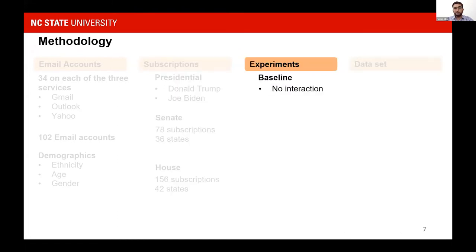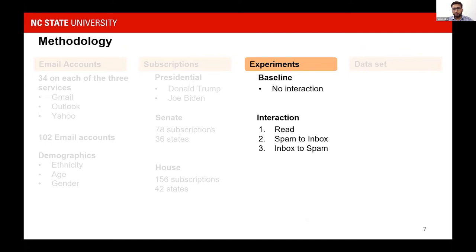We have two experiments. First is the baseline experiment, in which the new email accounts only receive the campaign emails and we do not perform any interaction with those emails. The idea is to capture the default filtering behavior of the SFA of the three services. Then we have the interaction experiment, where we perform three types of interactions: reading all emails in both spam and inbox, moving spam emails to inbox, and moving inbox emails to spam folder. For each of the three interactions, we assign new email accounts without any history. The idea behind this interaction experiment is to see how well the SFA has registered user preferences over time.